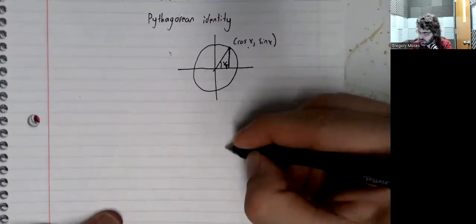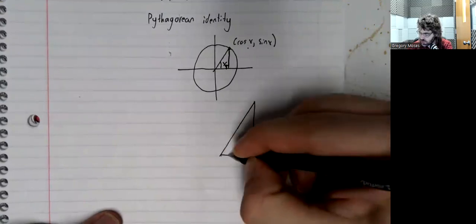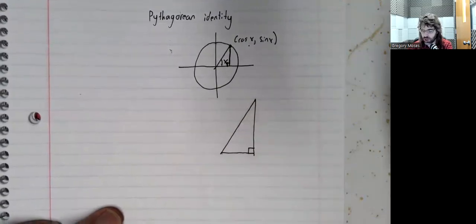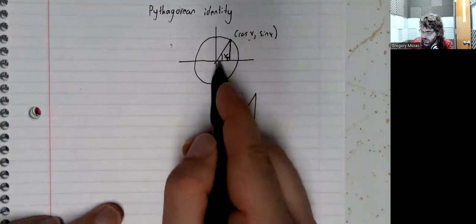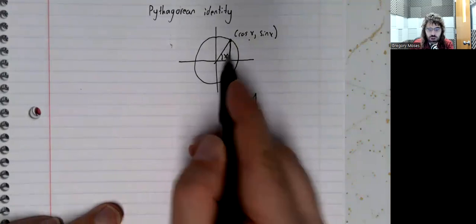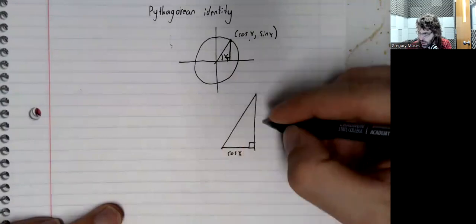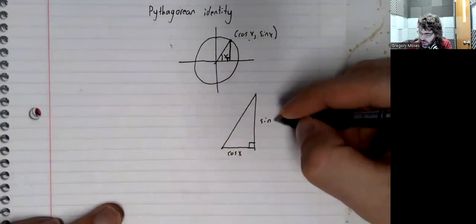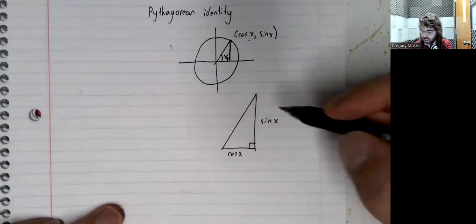And that tells us, moving down here and giving us a little space to work, the x-coordinate being the cosine says that this side of the right triangle is the cosine. The y-coordinate being the sine tells us this side of the right triangle is the sine.